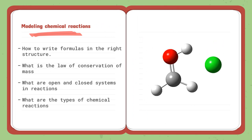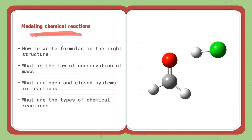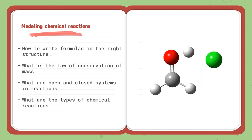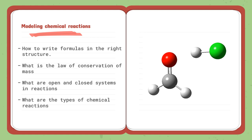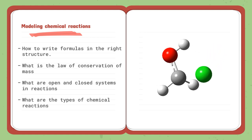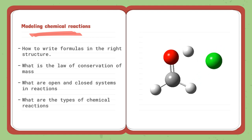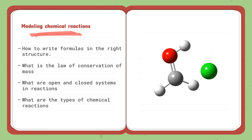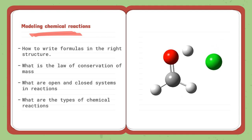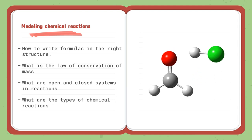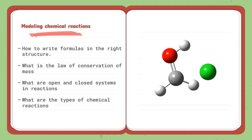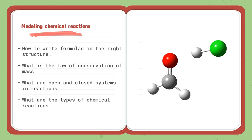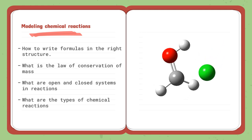The last lesson of Topic 2 is modeling chemical reactions. We will learn how to write a chemical formula and interpret it as an equation: reactant plus reactant yields one or more products. We will study the law of conservation of mass — whatever mass you start with, you end up with — and learn about open and closed systems in reactions. There are three types of chemical reactions: synthesis, decomposition, and replacement. We will distinguish each type through different formulas and give examples of each.